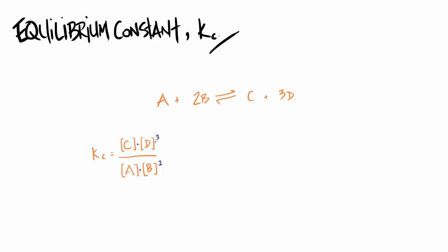So this is the equilibrium expression tied to A plus 2B in equilibrium with C plus 3D. Whatever equilibrium you have, the general rule is: products over reactants. The molar ratios become the indices on each concentration term.